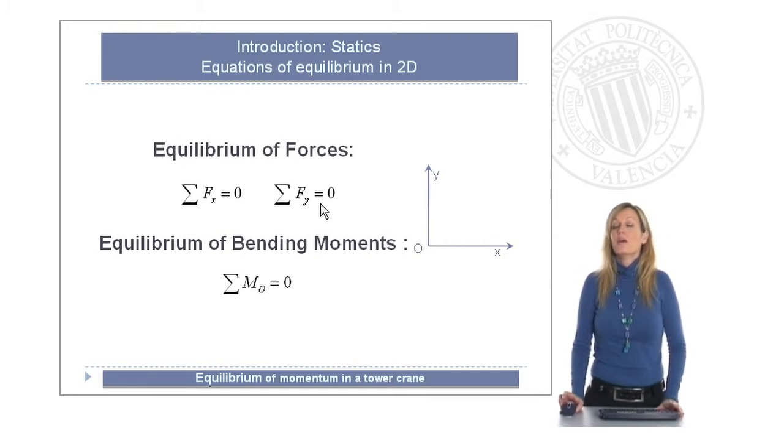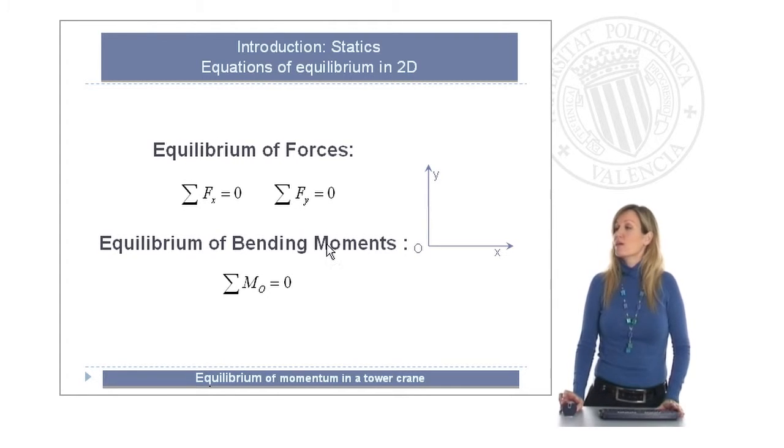only two equations for each one of the two axes we have. If we talk about moments, the equilibrium of moments in a two-dimensional case allows us to this equation of a sum of bending moments equal to zero in one point.